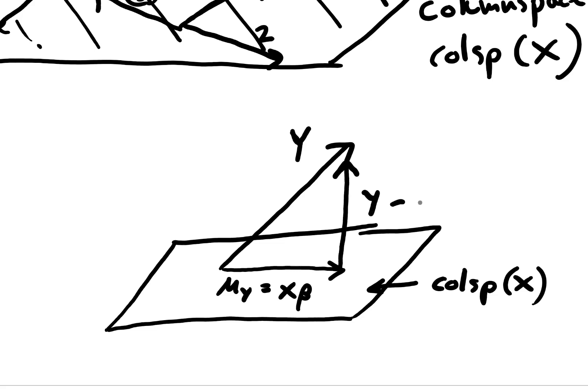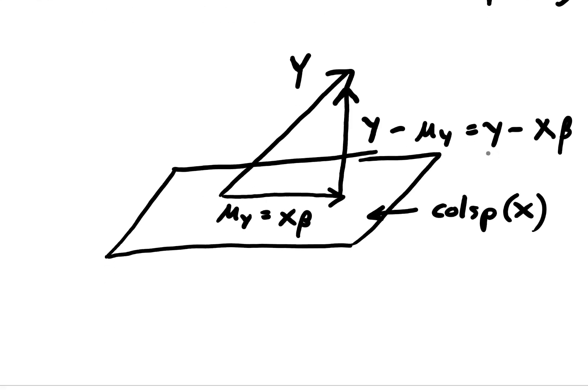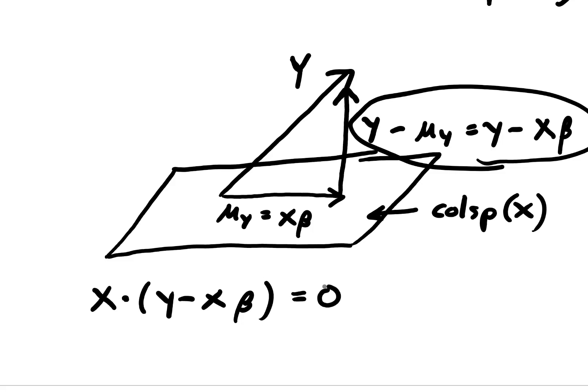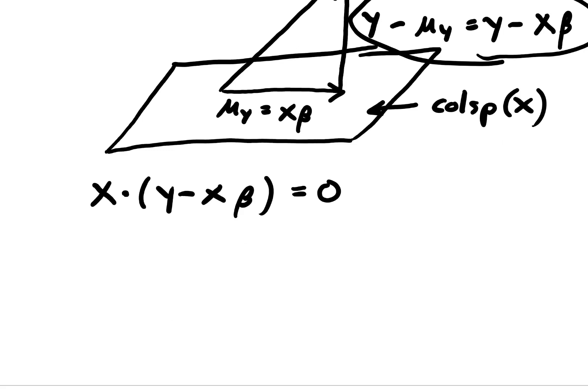All right, so what we want to do is say, okay, well, the error vector, if this is perpendicular to the x column space, then what we can do is take the dot product between those, and when they're perpendicular to each other, then the dot product is zero. So x dot y minus x beta, we're taking the dot product, and if these are perpendicular, then the dot product is equal to zero. What we want to do is solve this equation for beta, because that's our actual unknown. And so we can do that by x transpose y minus x beta is equal to zero.